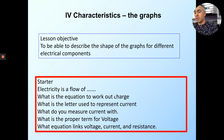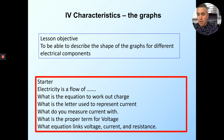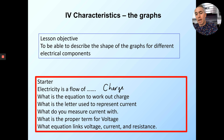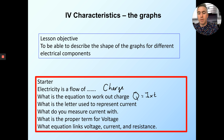Okay, so what is electricity? It is a flow of charge. What is the equation to work out charge? Q is equal to I times T. Charge is current times time.